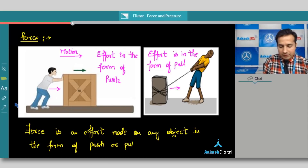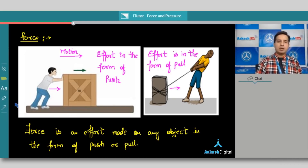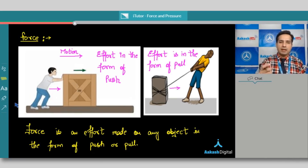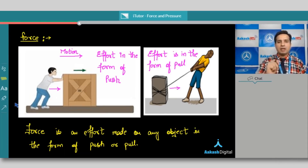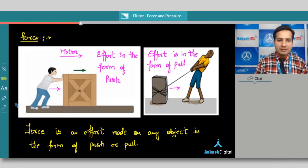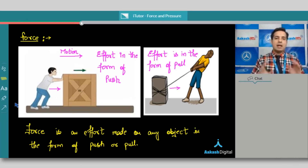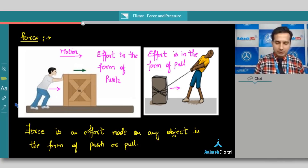You would have seen many examples of this. For example, if you have visited a well in a village, you would have seen that a bucket is put into the well and by pulling the rope we bring the water bucket outside — that is an example of pulling force. In a mall, we take a trolley and push it using a pushing force. These examples show that a force can be defined as a push or a pull on any object.